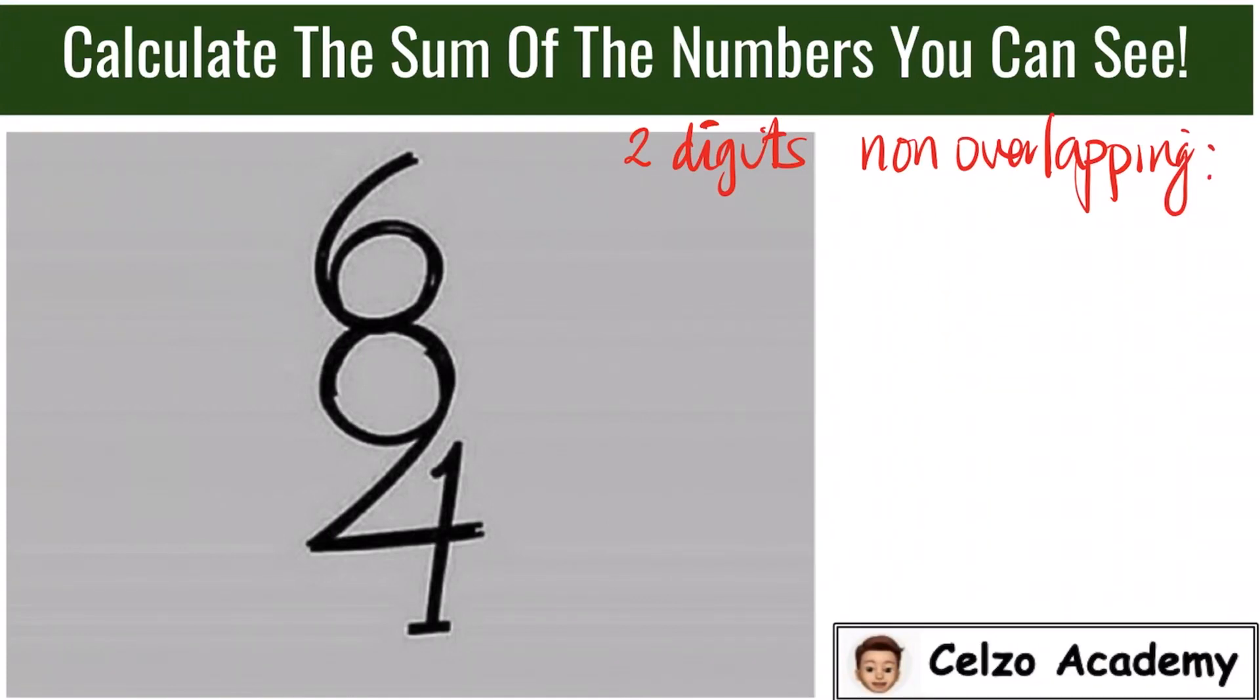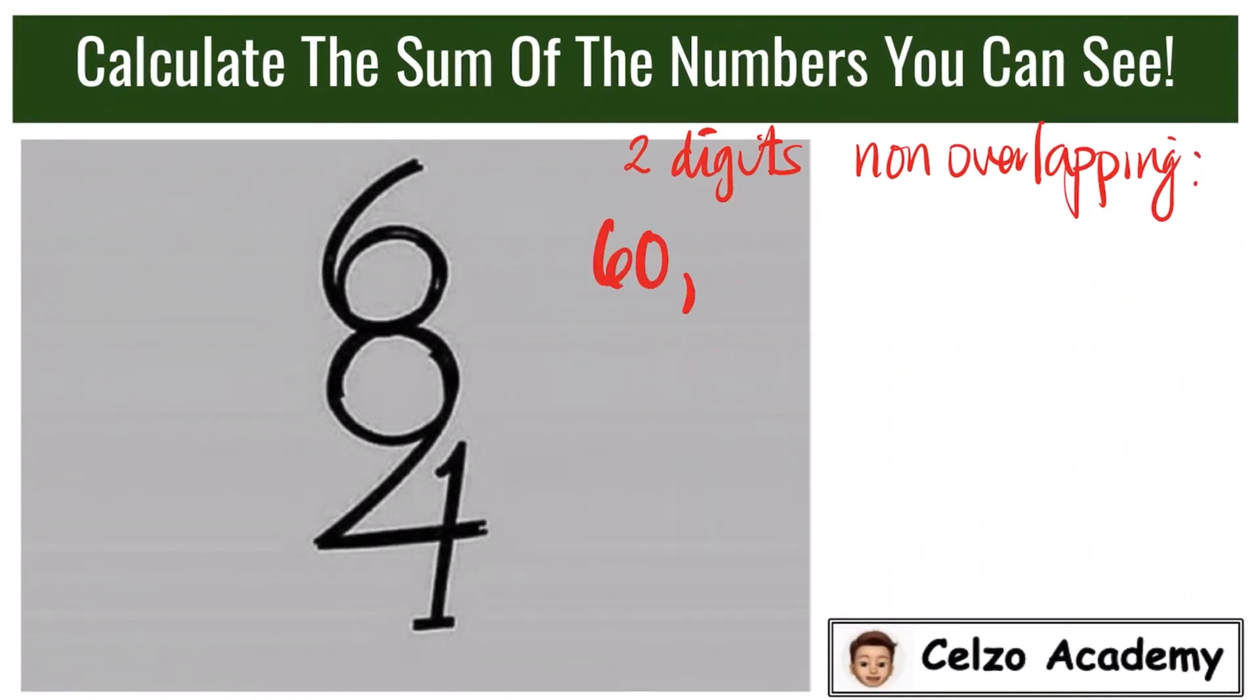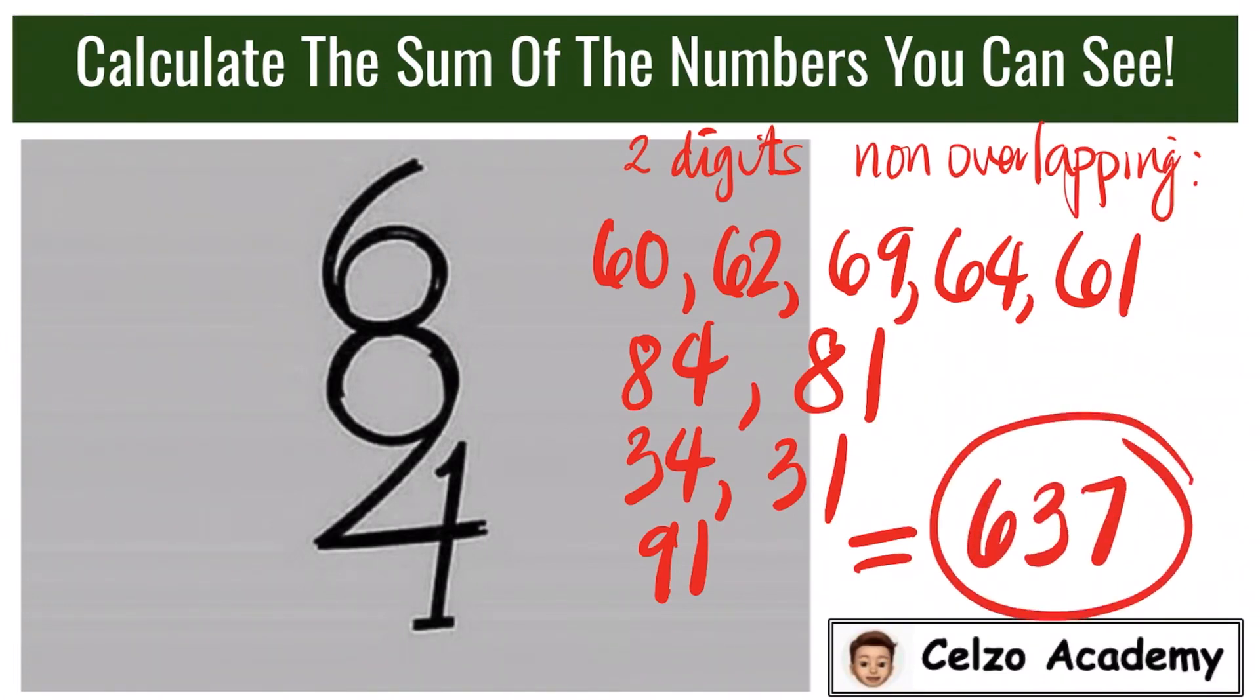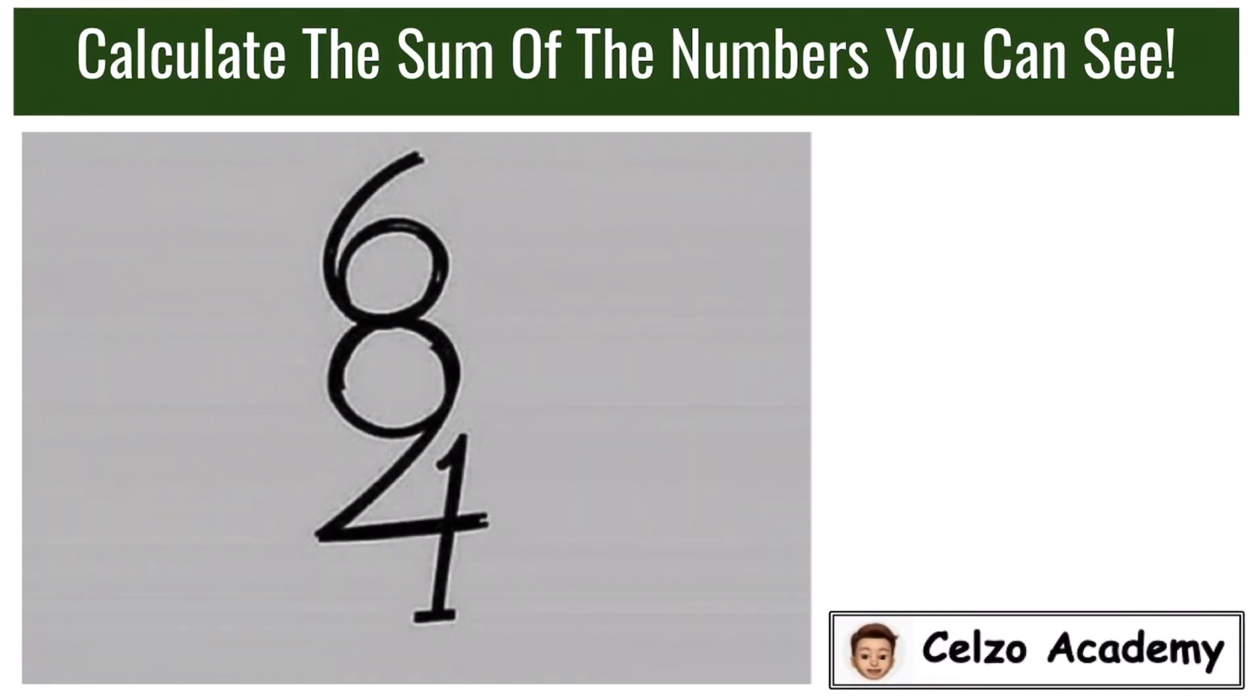These are the non-overlapping two-digit numbers. We have 60, 62, 69, 64, 61, 84, 81, 34, 31, 91. Adding these together, we have 637. So the sum of non-overlapping two-digit numbers is 637.